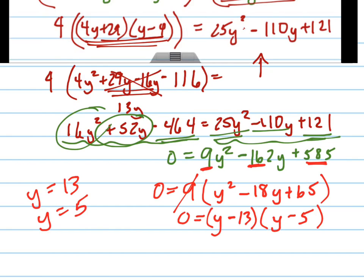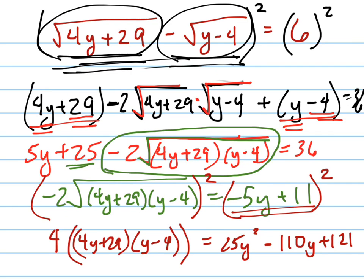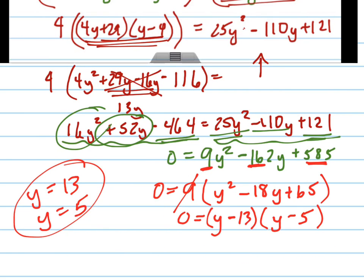But remember, those might not be correct answers because you could have extraneous solutions. So let's take 13 and 5, and let's check them. Plug in 13 here and here and check it, and sure enough, it works. And then plug 5 in here and here and check it, and sure enough, that works as well. So you know those answers are correct. You can circle them, and you're done.